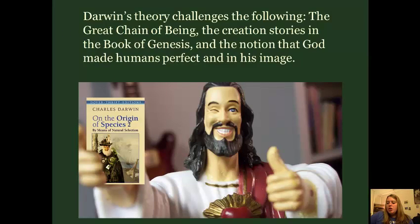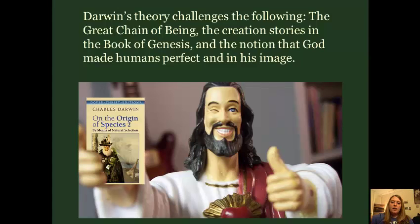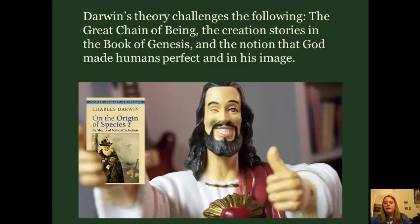Darwin's theory challenges three really important ideas from Judeo-Christianity. It challenges the great chain of being — the idea that all civilization is in a hierarchy with God at the top, then angels, then man, then woman, then animals, plants, rocks, and so on. If we evolved from animals, how could we be in a different spot on the great chain? It challenges the creation stories in Genesis, because if God created man and woman then we would never have evolved from anything else. And it also challenges the understanding that God made humans perfect and in his image. These are the big three ideas that it challenges.